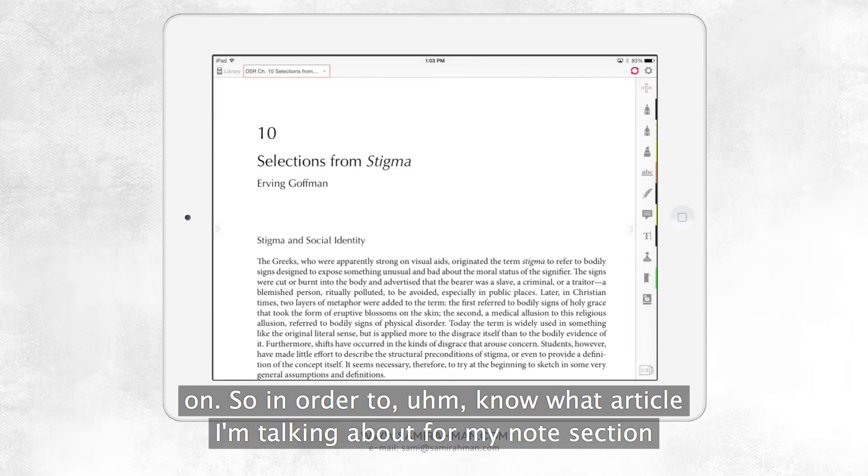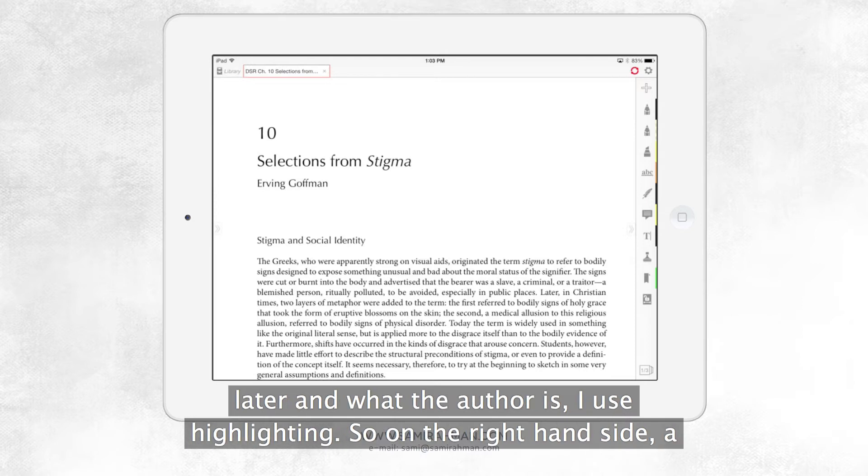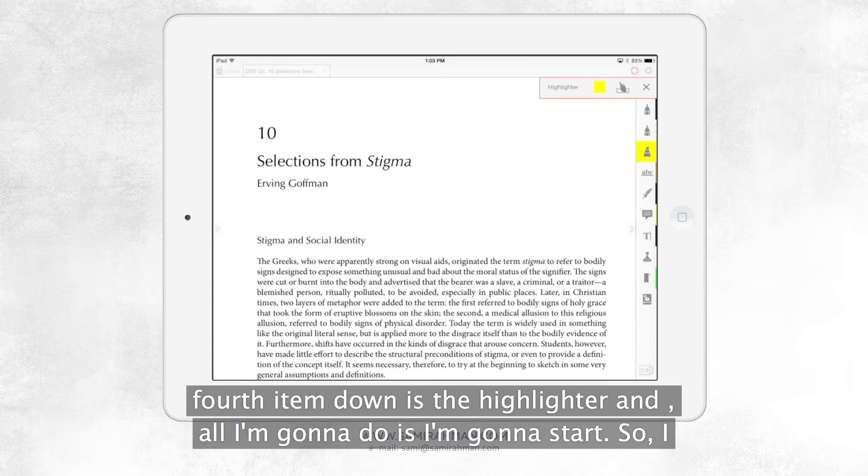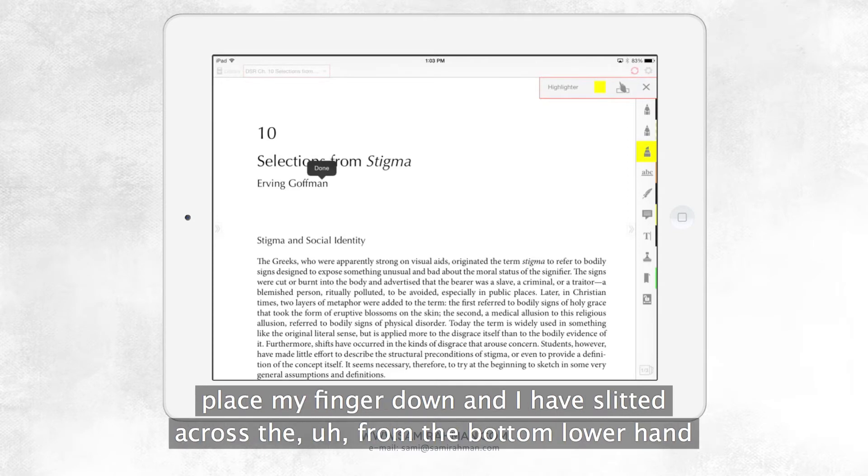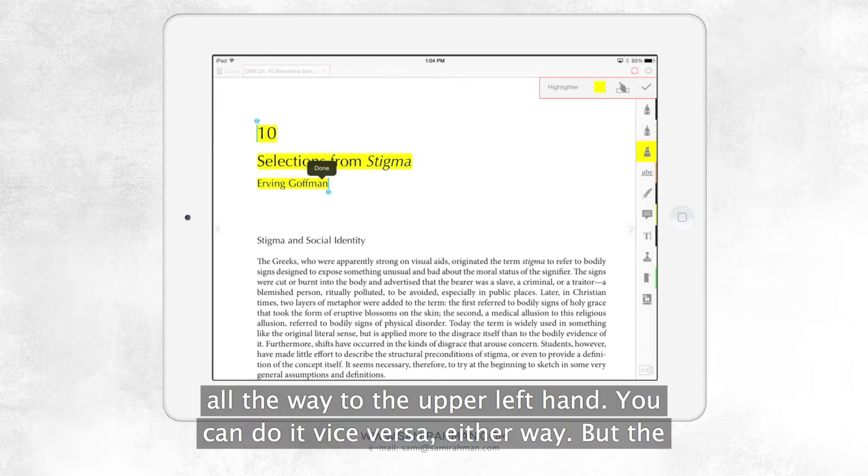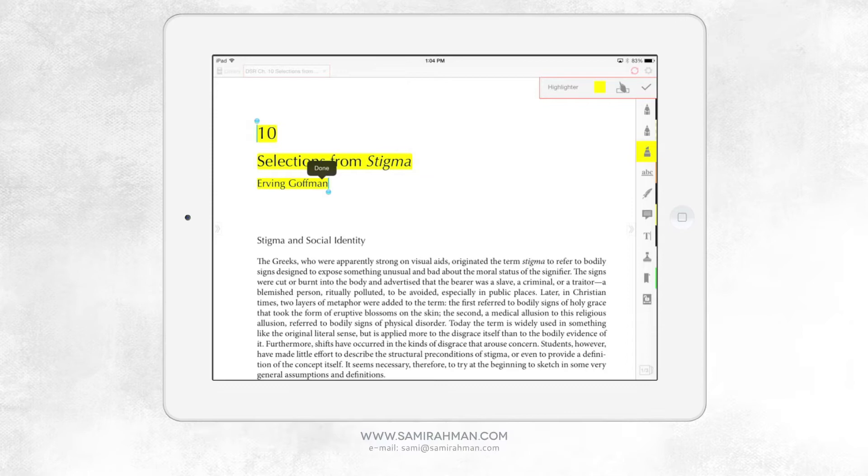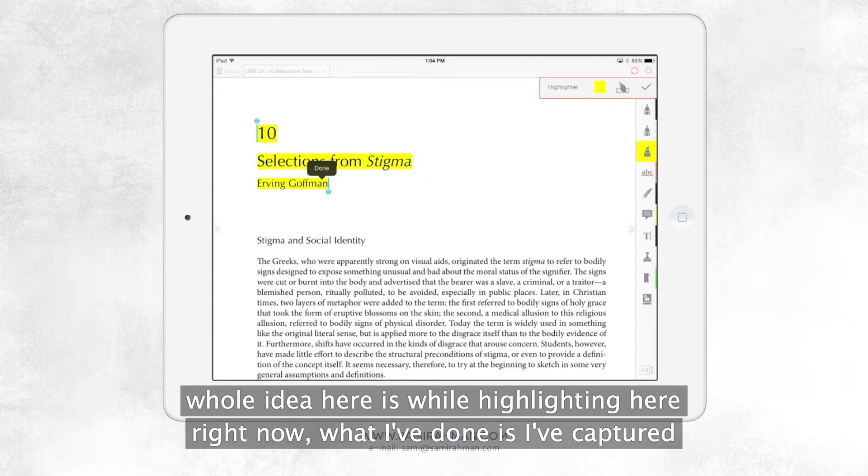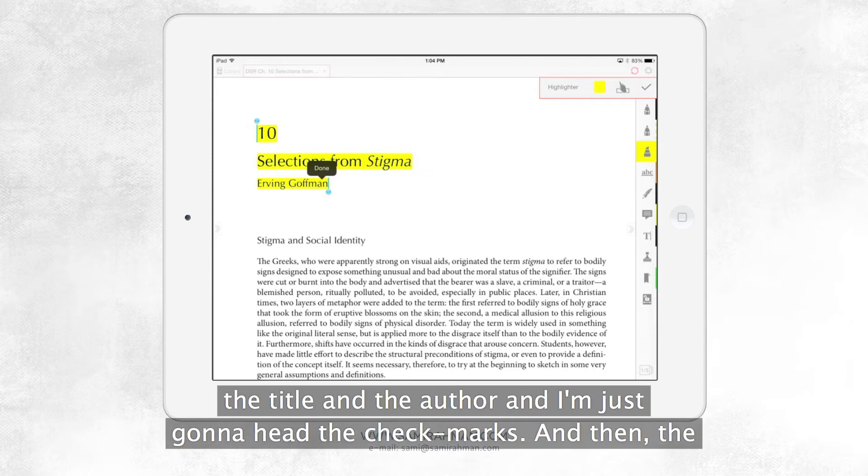So in order to know what article I'm talking about for my notes section later and what the author is, I use highlighting. So on the right-hand side, fourth item down is the highlighter. And all I'm going to do is I'm going to start. So I place my finger down and I have slid it across from the bottom lower hand all the way to the upper left hand. You can do it vice versa, either way. But the whole idea here is, while highlighting here right now, what I've done is I've captured the title and the author. And I'm just going to hit a check mark.